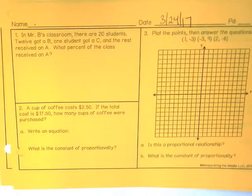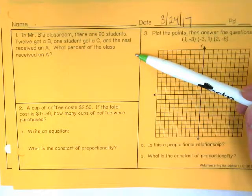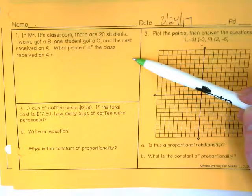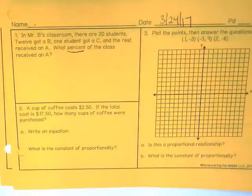Okay, so when we're looking at problem number one from last week: In Mr. B's classroom, there are twenty students. Twelve got a B, one student got a C, and the rest received an A. What percent of the class received an A?